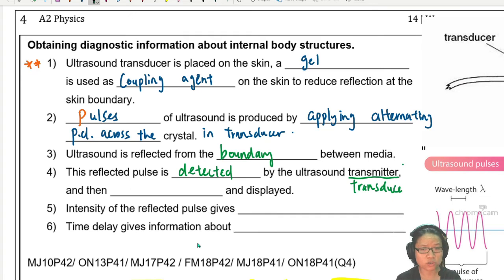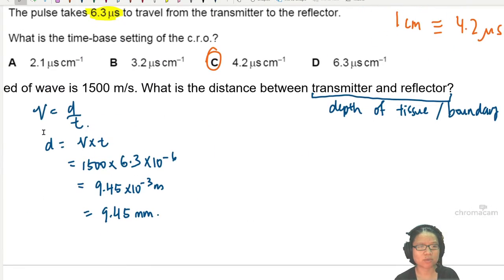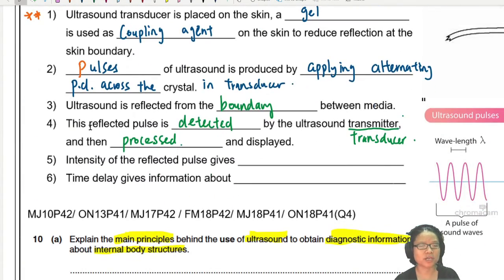You could use the word transducer. And then obviously we're going to have to process the data. The brief calculation I did just now was a data processing. I did the data processing, but we can command or write a code for the computer to do it. So the reflected pulse is detected and processed.